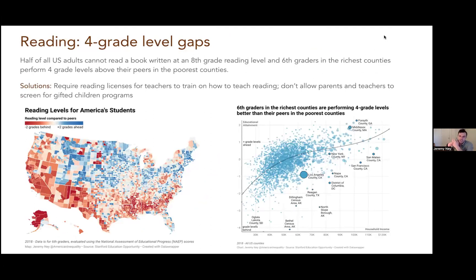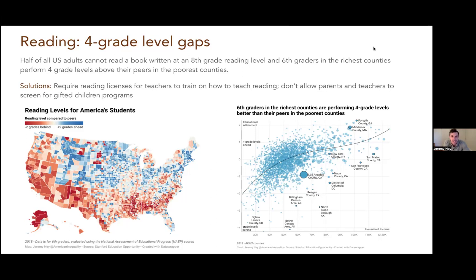Annie and I really wanted to focus on many issues that bring to life the challenges that teachers have. This issue on reading is one that is really so challenging because we think of the US as being such a developed country with so many great resources, but at the same time, half of all US adults cannot read a book written at an eighth grade level. Sixth graders in the richest counties perform four grade levels above their peers in the poorest counties — reading at an eighth grade level versus a fourth grade level. We can also see that strong relationship between income and literacy rates and educational attainment.